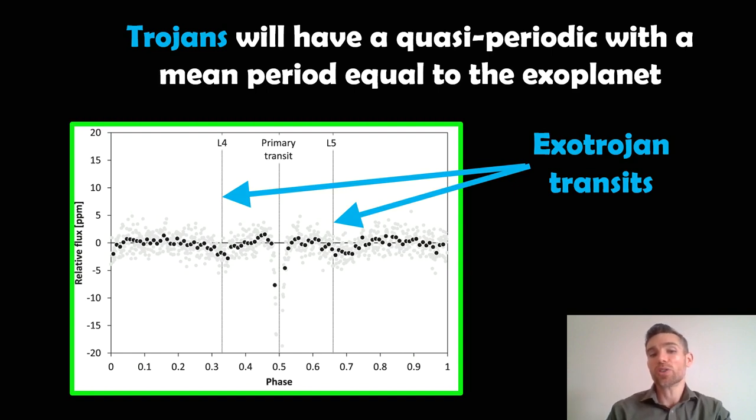So these Trojans, these exotrojans, will have quasi-periodic transits, which means their orbital period will change because they're moving around relative to the actual exoplanet. But their mean period, if you average it out over time, their mean period would equal the exoplanet. So it's a bit more complicated than just a planet.